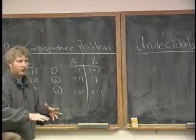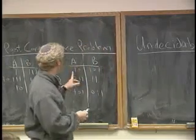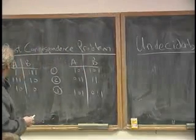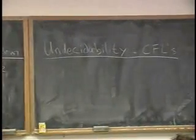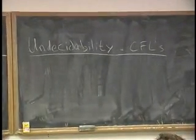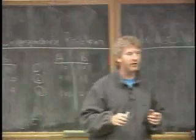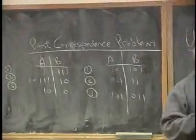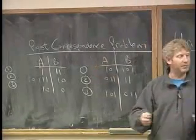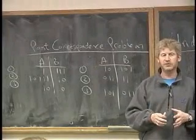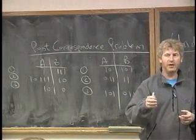The bridge between undecidable questions about computer programs and undecidable questions about context-free languages is done through this famous problem called the post-correspondence problem. We did this yesterday and I want to review what it is. I will tell you, and you have to take this on faith right now because it's a very technical and long proof, that somebody has proved that if you could solve the post-correspondence problem, then you could also figure out whether a program infinite looped or not.